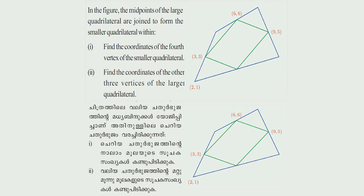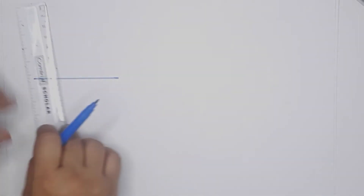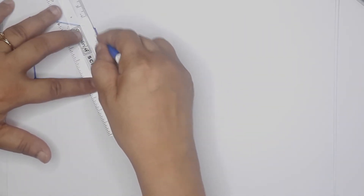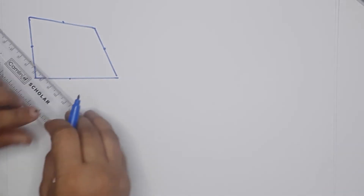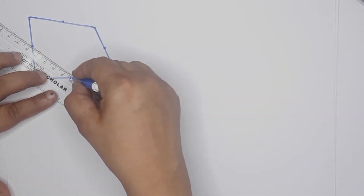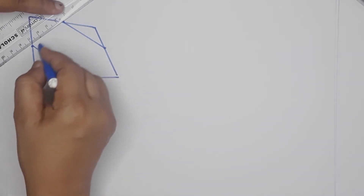First question: find the coordinates of the fourth vertex of the smaller quadrilateral. Second: find the coordinates of the other three vertices of the large quadrilateral. If we join the midpoints of each side, we get a parallelogram. We have learned how to work with a parallelogram.